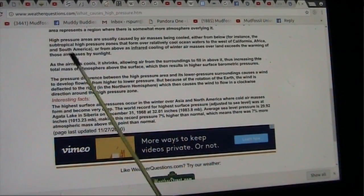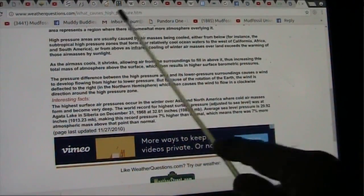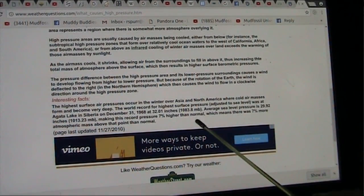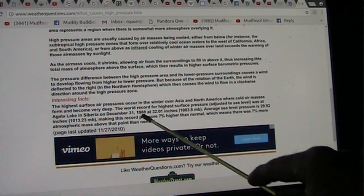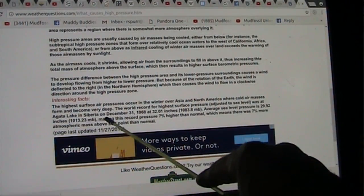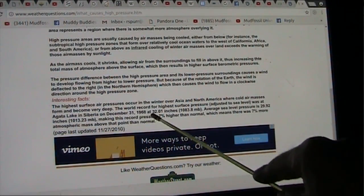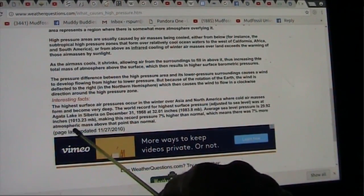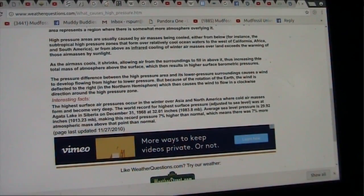The earth is hitting this area, being impacted more than other areas, and it's crushing it. The highest surface pressure was at a lake in Siberia on December 31st, 1968. 32 inches, average sea pressure is 29.9, so it's 7% higher than normal. I say there was more ether pushing against it at that point. We're in a dense region in the galactic soup.